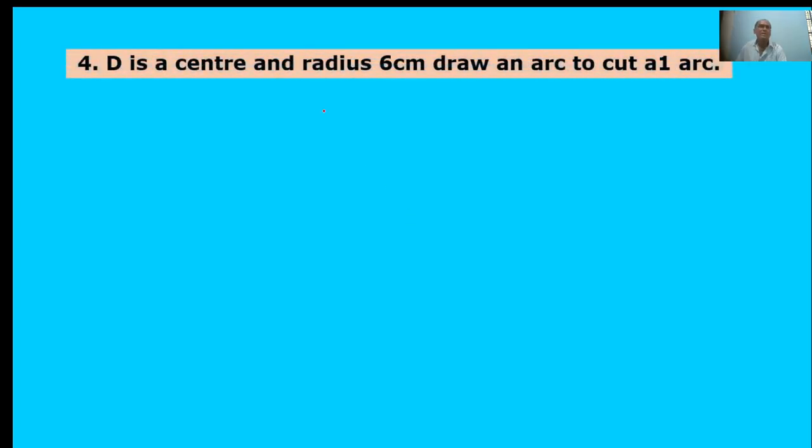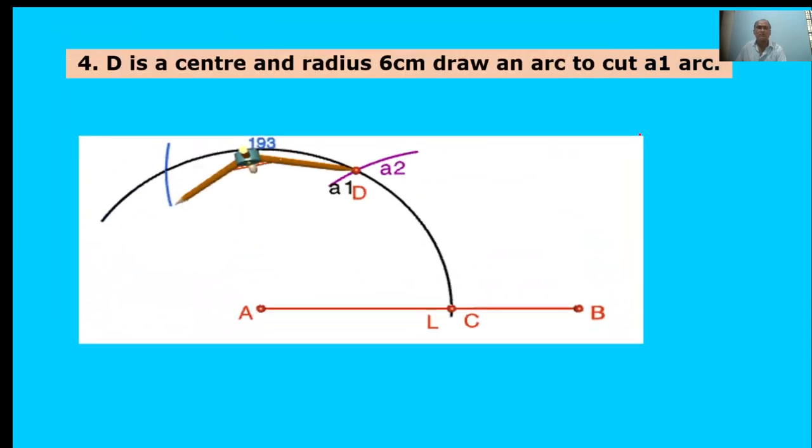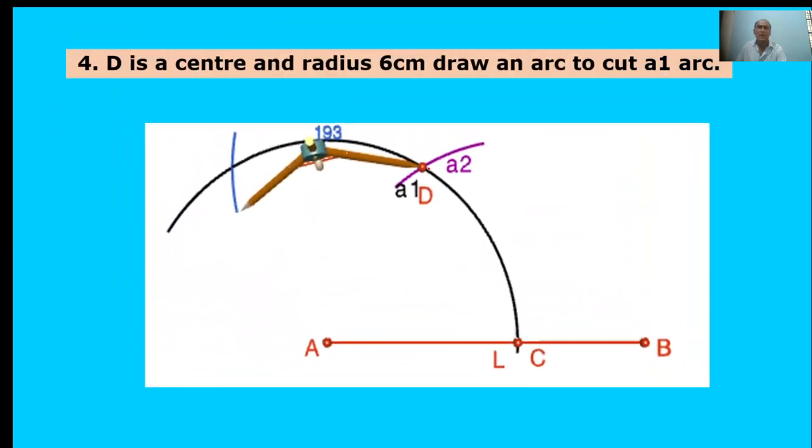D is center and radius 6 centimeters, draw an arc to cut A1 arc. Same process. Here, point D, intersect point D is the center point. Radius is 6 centimeters. Draw an arc to cut the previous arc at A1. This is point E.